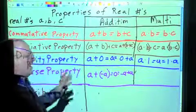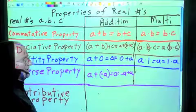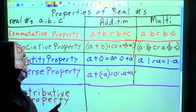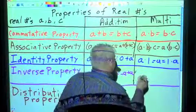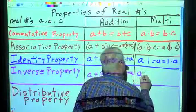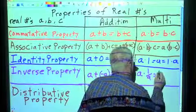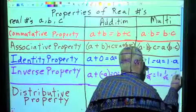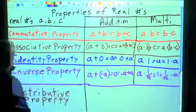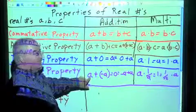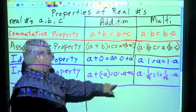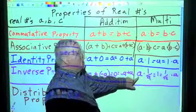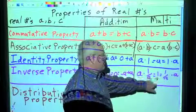Multiplication is a little bit different. It simply says there is a number in multiplication that is the multiplicative opposite of A — it will give me 1. A times 1 over A equals 1, and 1 over A times A equals 1. So the inverse property says there is a number opposite A; when I multiply them, it gives me 1.